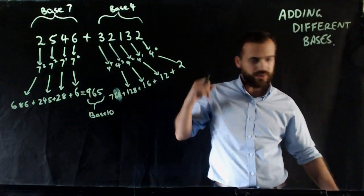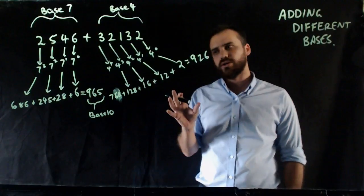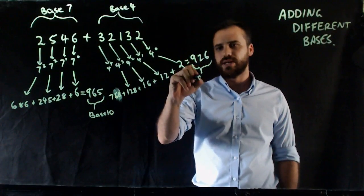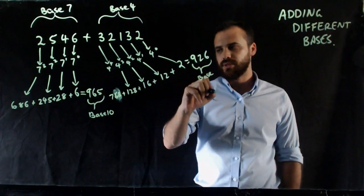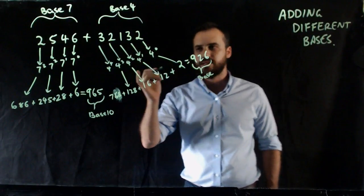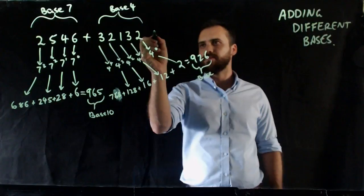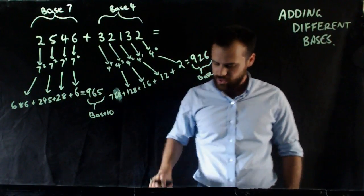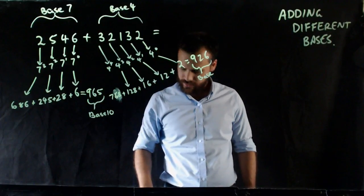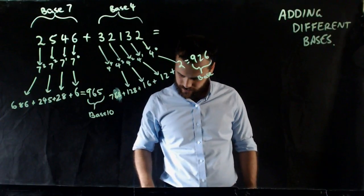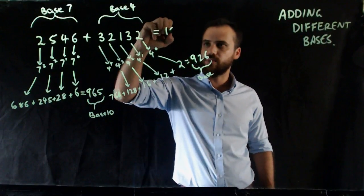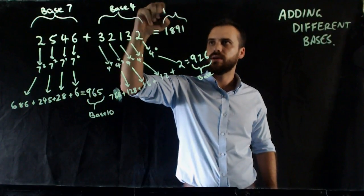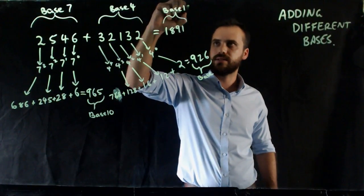So I'm going to add all of them up — that's 926. And again, we don't want to get confused: that's in base 10. So our final answer, if we add this up, it's going to be equal to 965 plus 926, which equals 1,891 in base 10.